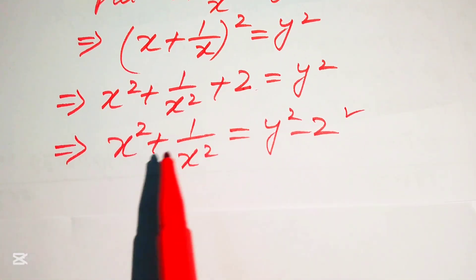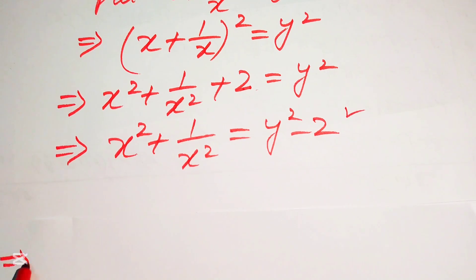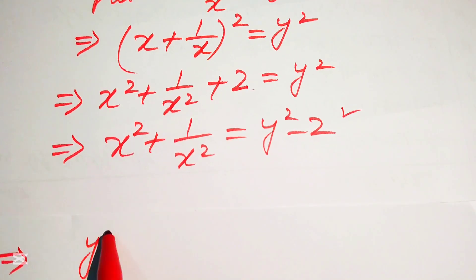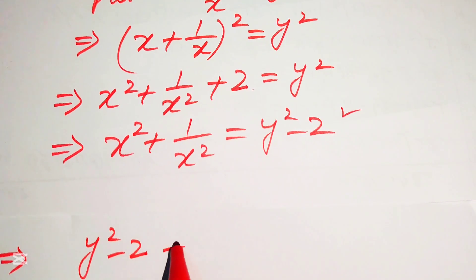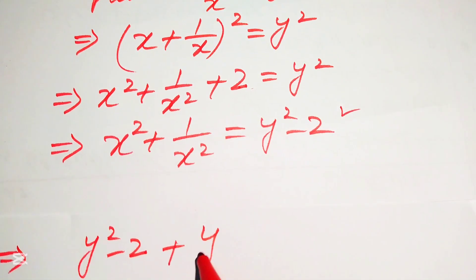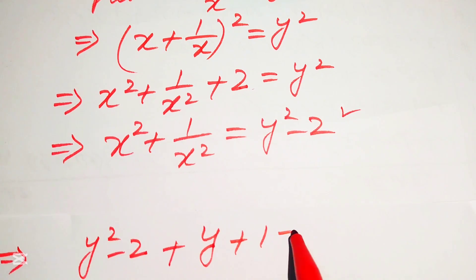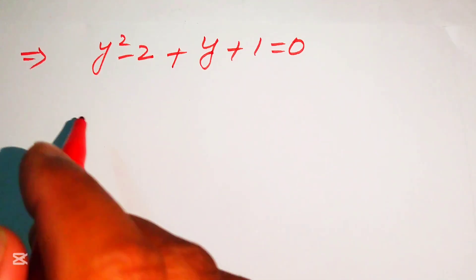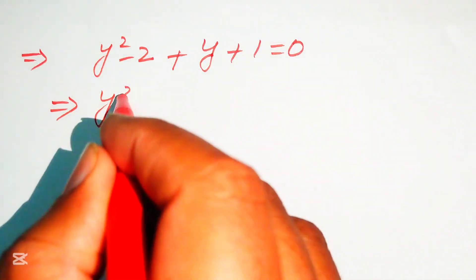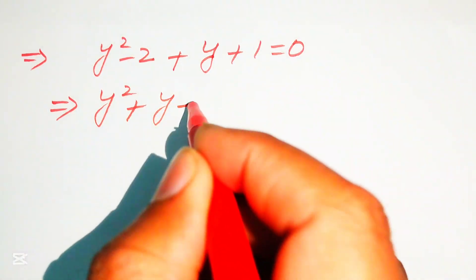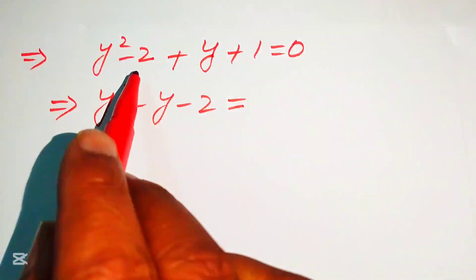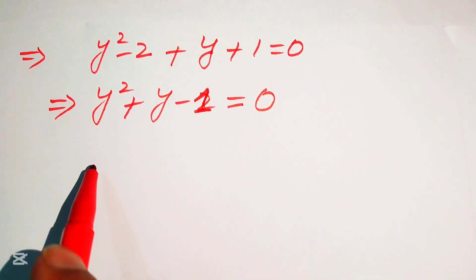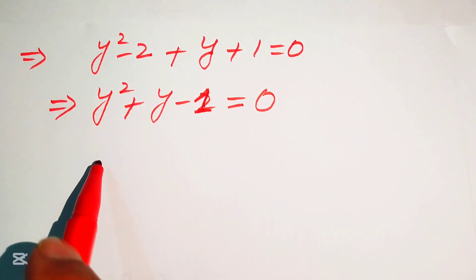Substituting into the equation: x squared plus 1 over x squared becomes y squared minus 2, and x plus 1 over x becomes y, plus 1 equals 0. Rearranging gives the quadratic equation y squared plus y minus 1 equals 0.